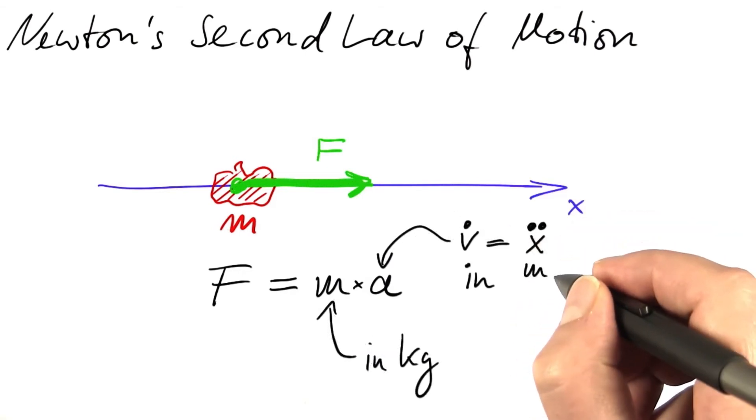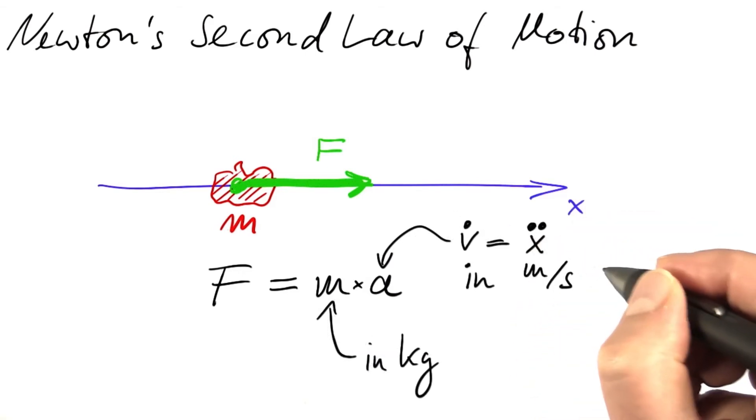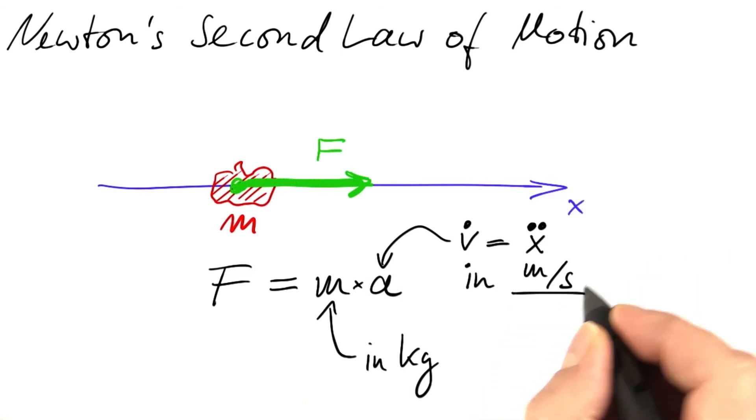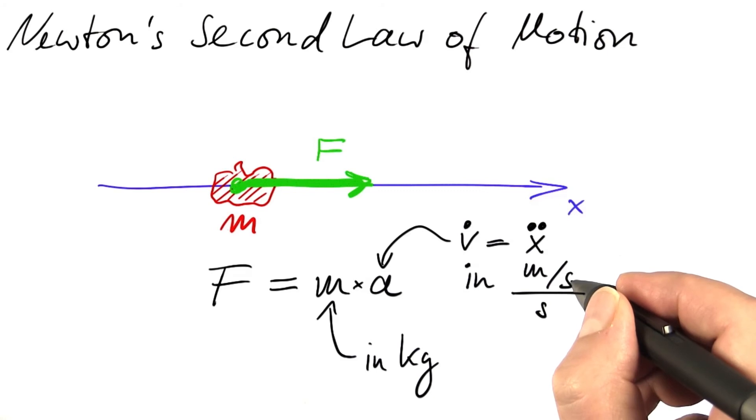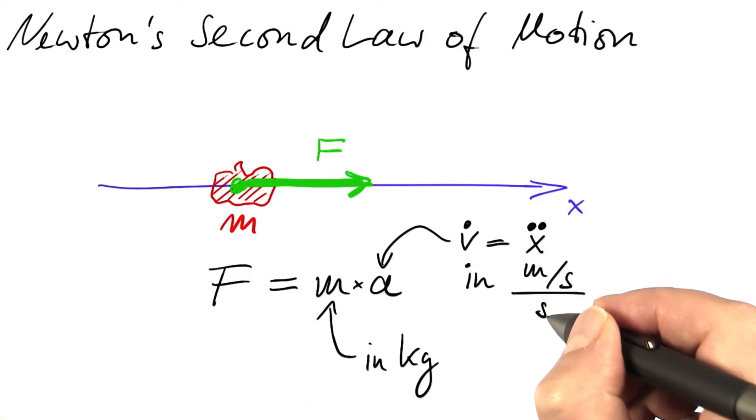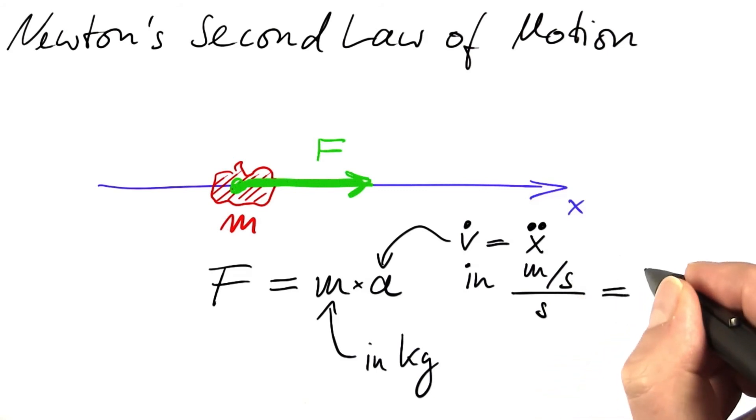Velocity is meters per second internationally, and the change would be meters per second per second. By how many meters per second does the velocity change per second? That is meters per second squared.